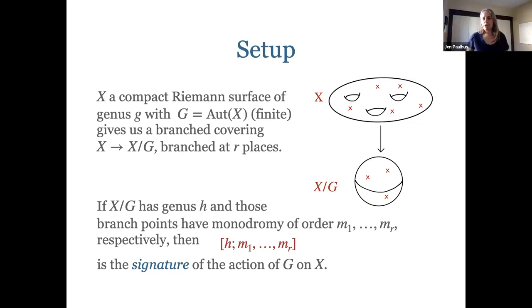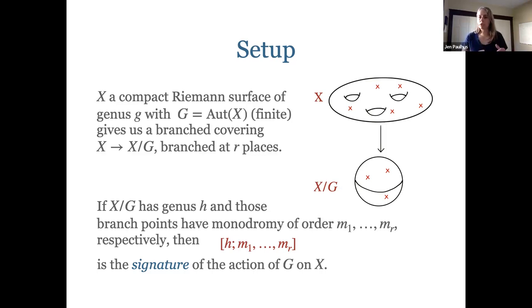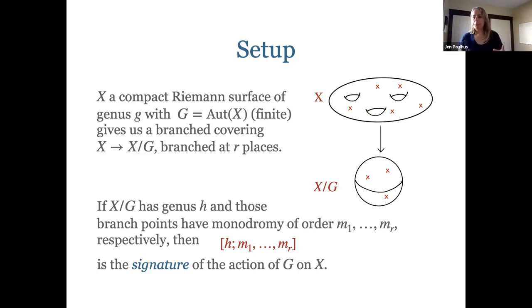Here's the setup: we have a compact Riemann surface X of genus g, and G is the automorphism group acting on it. We have this branched cover from the Riemann surface to the quotient. We have something called the signature: the first number is the genus of the quotient, and then the MIs are positive integers giving the orders of the monodromy corresponding to each branch point. There are times where we want to record the full cycle structure, but for this talk I'll focus on recording just the orders.